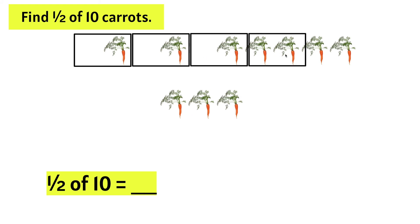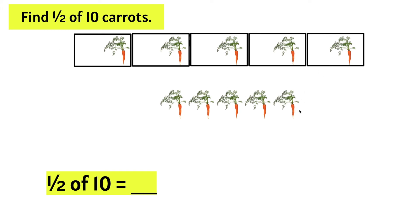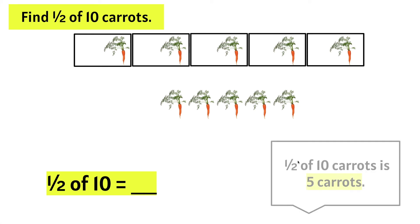Two more and we need half of two, which is one. Two more and half of two is one. Lastly, another set of two and we only need one half, so one. Let's count: one, two, three, four, five. So, we can say half of 10 carats is five carats. One half of 10 equals five.